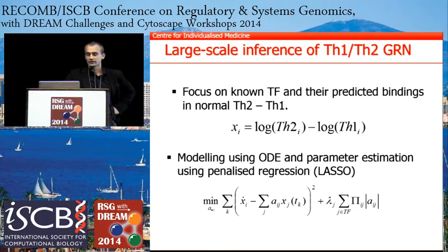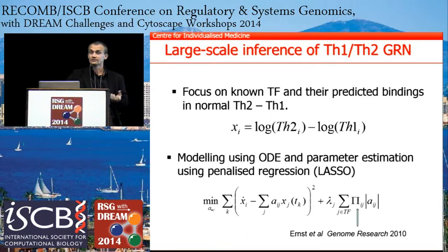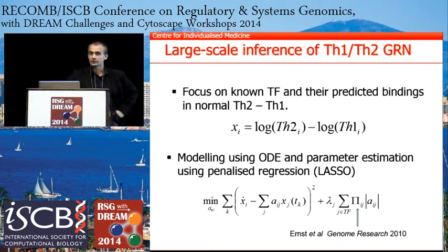We added one component: a Pi_ij term that prioritizes interactions for which we have sequence-based predictions. We used a static Pi_ij from the Ernst paper, where they took DNA hypersensitive sites and many other features to identify likely transcription factor binding sites and computed predictions for those. These two things come together to give us a network for the whole process.